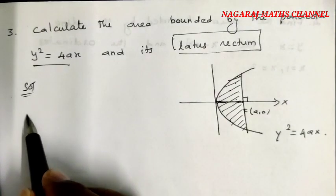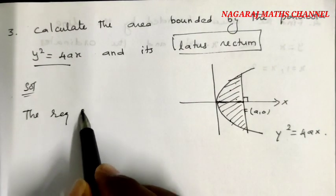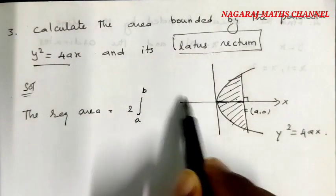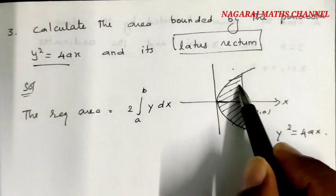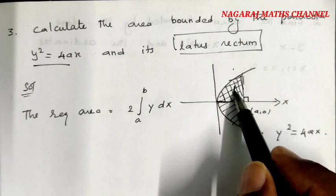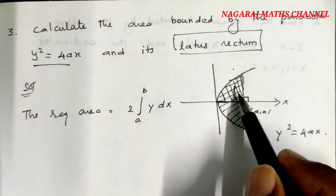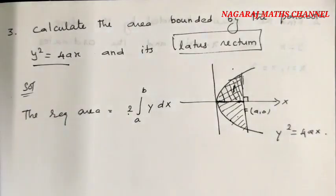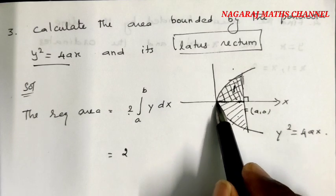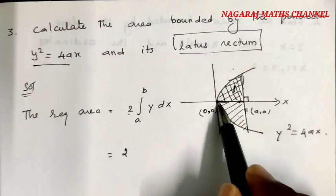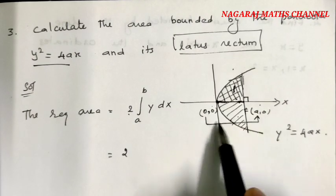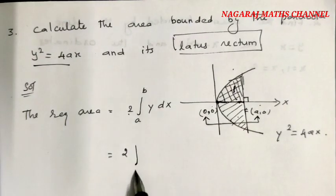Therefore, the required area is 2 times the integral from a to b above the x-axis. Using symmetry, this is 2 times integral from 0 to a. The limits are from origin (x = 0) to x = a.